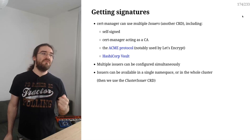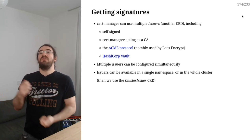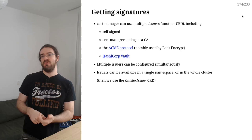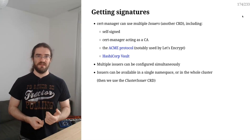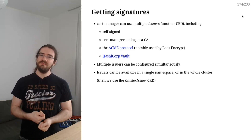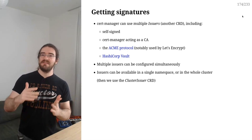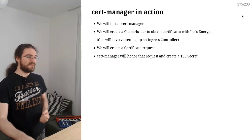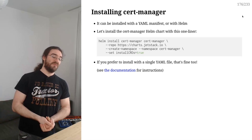We need to install cert-manager and then configure it by creating issuers. An issuer is basically a configuration to obtain a certificate. For instance, you could have an issuer for self-signed certificates, an issuer to obtain certificates from Let's Encrypt, an issuer from Vault, or even multiple issuers side by side. We'll actually show that because we will have both a Let's Encrypt staging and production issuer.